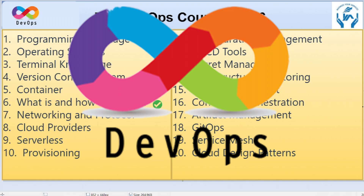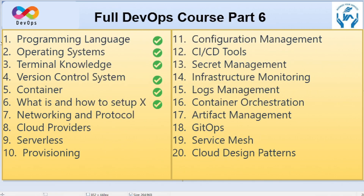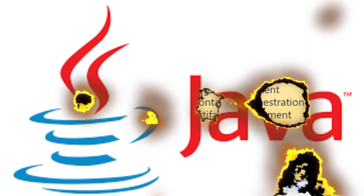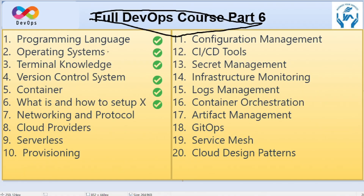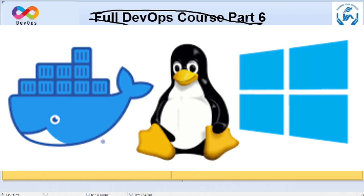Let me recall what we have covered in all previous sessions. We covered programming languages, using Java as a core language, Angular for front end, and basic languages like JavaScript, HTML, and CSS wherever possible. We also chose operating systems — Windows and Ubuntu — doing installation and configuration as needed throughout this DevOps series.